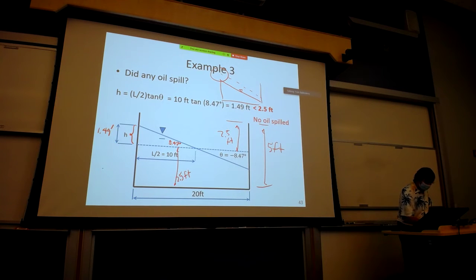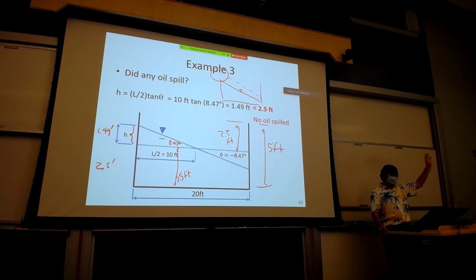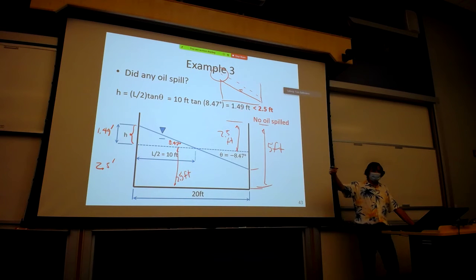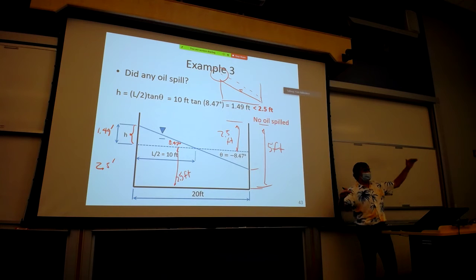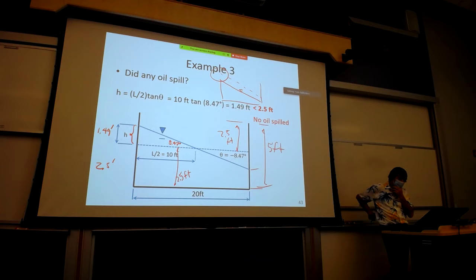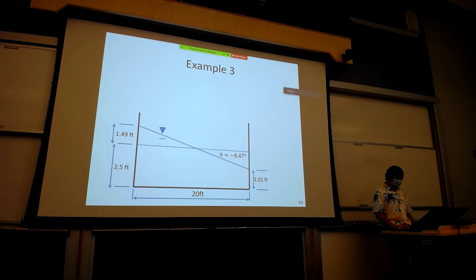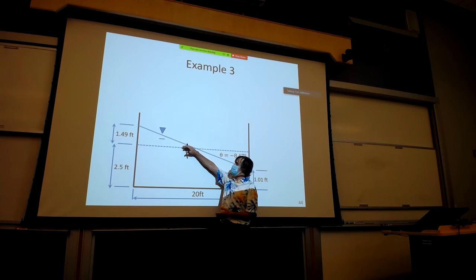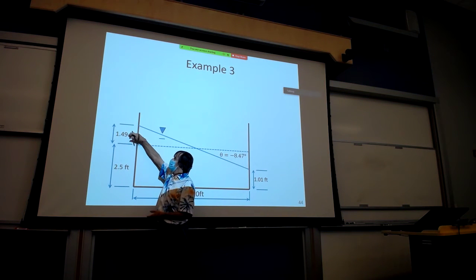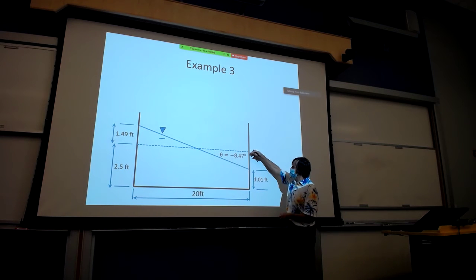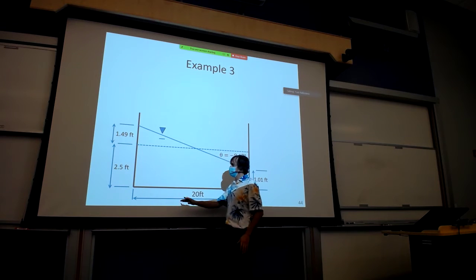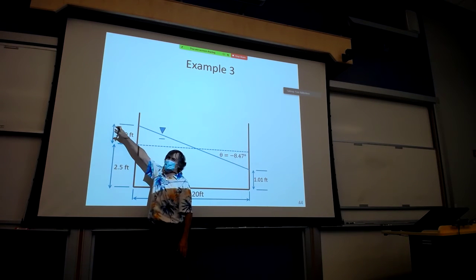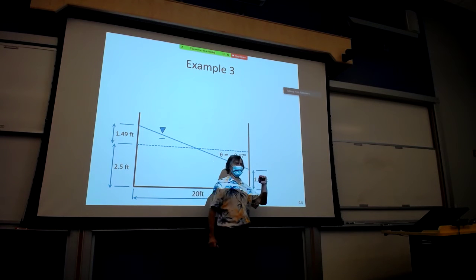The fluid went up 1.49 feet on the left side and went down 1.49 feet on the right side. So the total depth on the left-hand side is 2.5 + 1.49 = 3.99 feet of oil, and on the right-hand side it's 2.5 − 1.49 = 1.01 feet of oil.